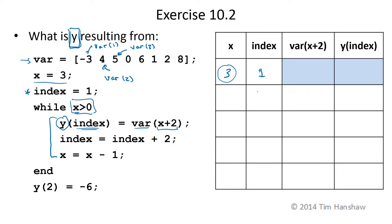Now inside this statement, we need to keep track of index, which is 1. X, which is still 3. It hasn't been changed yet. So that var of X plus 2, X plus 2 is going to be equal to 5.